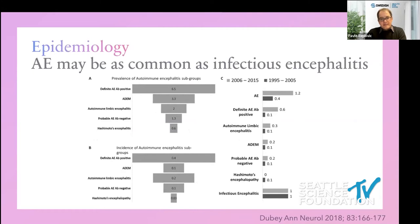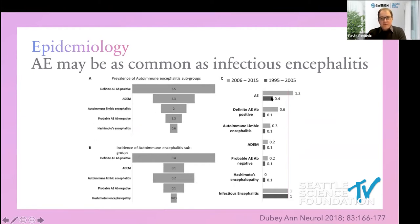Autoimmune encephalitis as an entity may be as common as infectious encephalitis, according to a study that compared the prevalence and incidence of autoimmune encephalitis to infectious encephalitis. If infectious encephalitis is set at one, the prevalence of autoimmune encephalitis is pretty close to that. The two bars refer to two time periods — before 2005 and after 2006 — and you can see significant recognition of these entities after 2006.